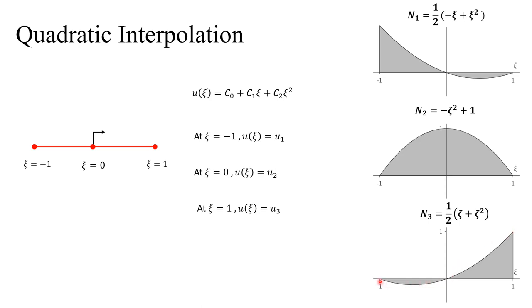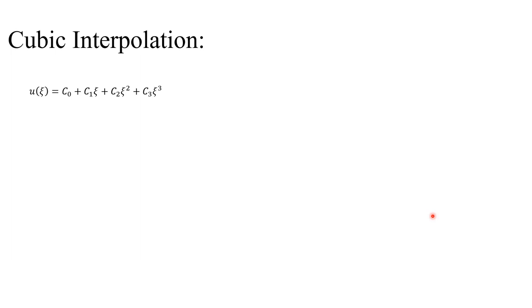N2 is 1 at its node and 0 at the other two nodes; N3 is 1 at node 3 and 0 at the other two. You can verify this by plugging ξ = 1 into the equation: (1+1)² / 2 = 1, confirming correctness. We can go even higher and use cubic interpolation, which has four nodes — though it looks like three linear elements, it is one element. The cubic interpolation function has four unknown coefficients, matched by four boundary conditions, yielding four shape functions N1 through N4.